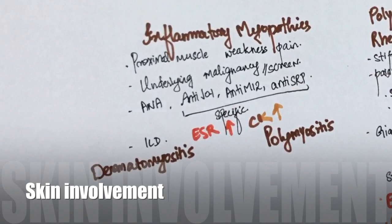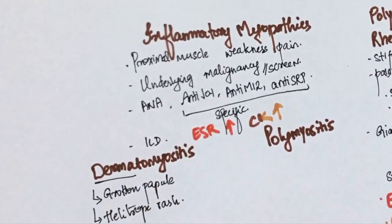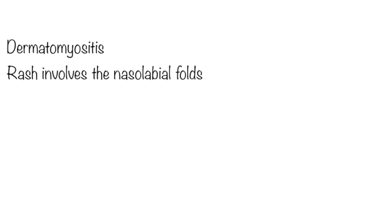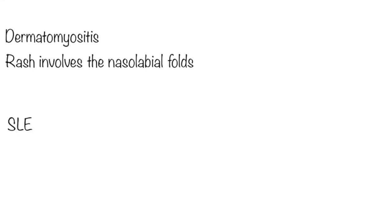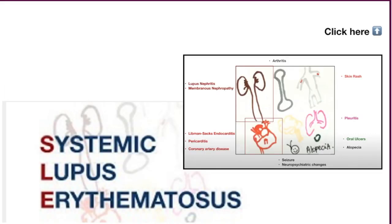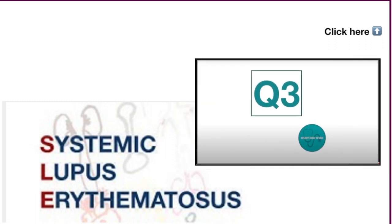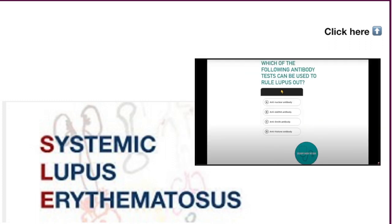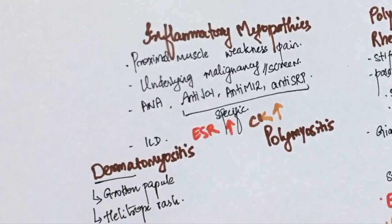What makes one different from another is the skin involvement. Gottron's papules and a heliotrope rash may be seen in dermatomyositis. Note that this differs from lupus because the rash in dermatomyositis involves the nasolabial folds, whereas in lupus the rash spares the nasolabial folds, giving it a butterfly appearance. I have an entire video on lupus, so make sure you check that out.